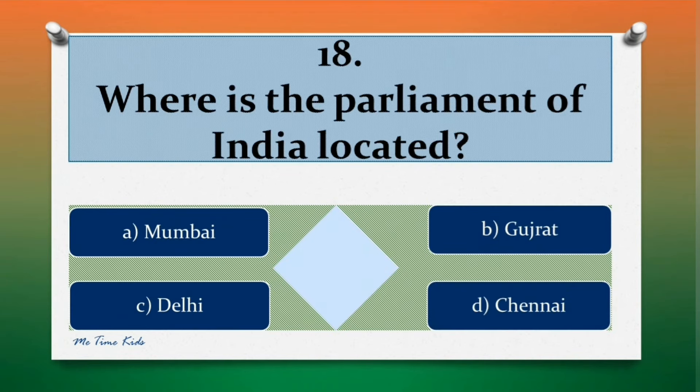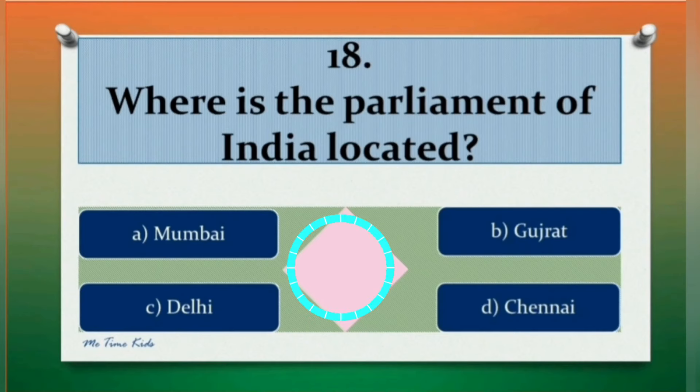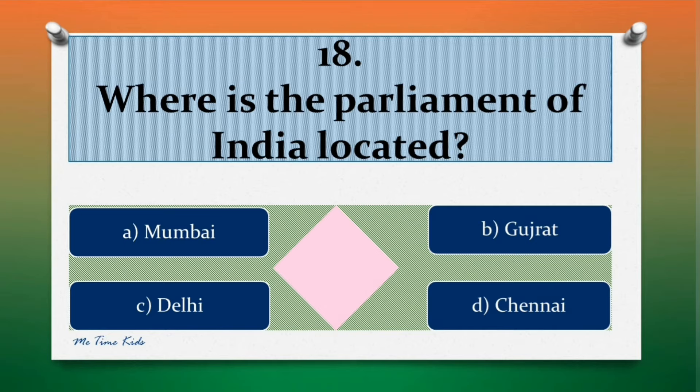Question 18. Where is the Parliament of India located? Options are: a. Mumbai, b. Gujarat, c. Delhi, d. Chennai. Correct answer is c. Delhi.